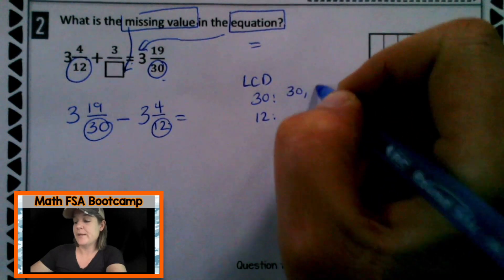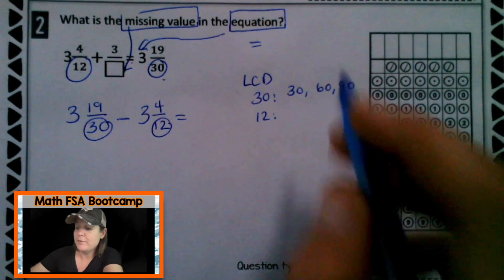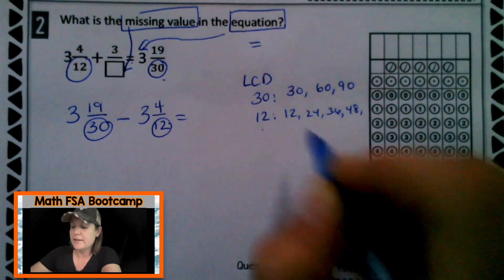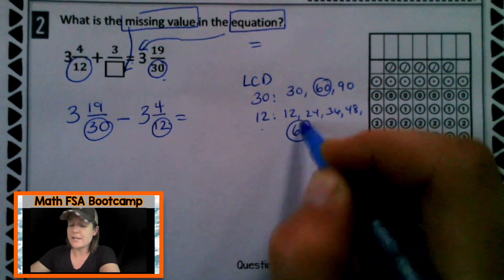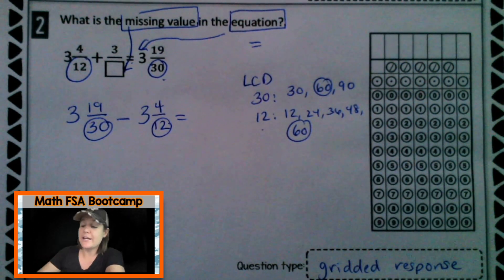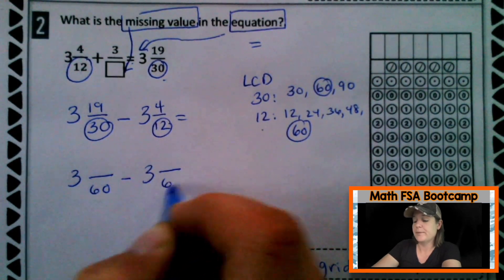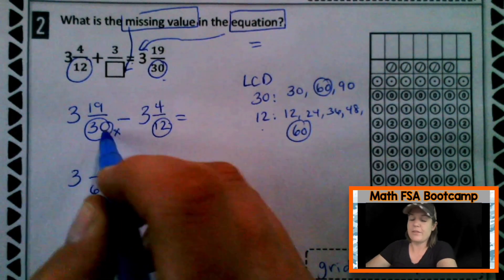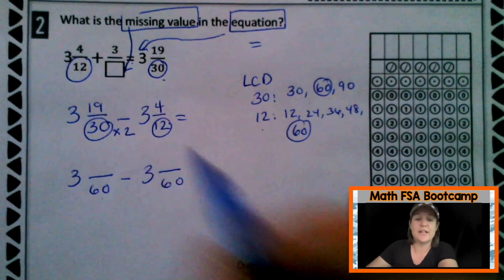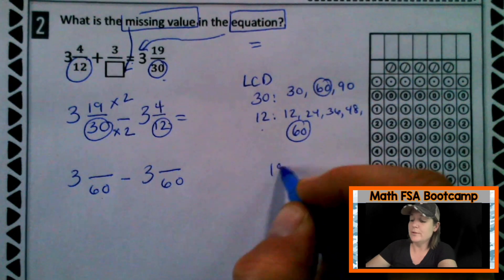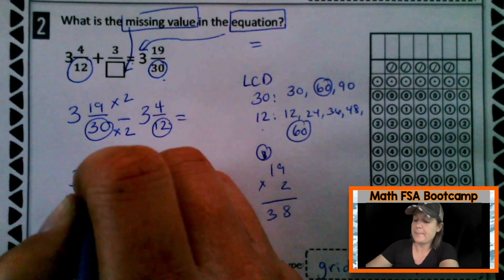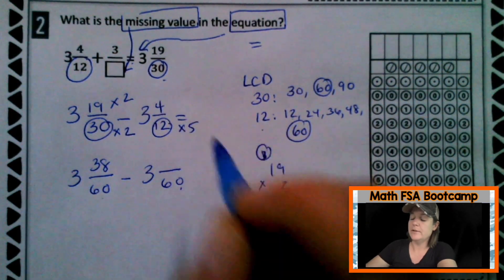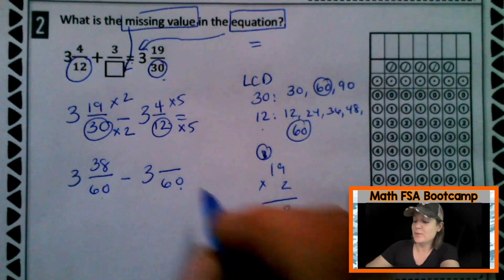So if I count by 30s, I would get 30, 60, 90. I could keep going. And then for 12, I'm going to count by 12s. 12, 24, 36, 48, the big 60. I've got a match. They both have a 60 in common. So now it's time to rewrite with the common denominator. So I'm taking my whole number 3 and something 60ths minus 3 and something 60ths. So how did I get from 30 to 60? I multiplied by 2, same on the bottom, same on the top and 19 times 2 would be 38. 12 goes into 60, that was 1, 2, 3, 4, 5 times. And so 4 times 5 would be 20.